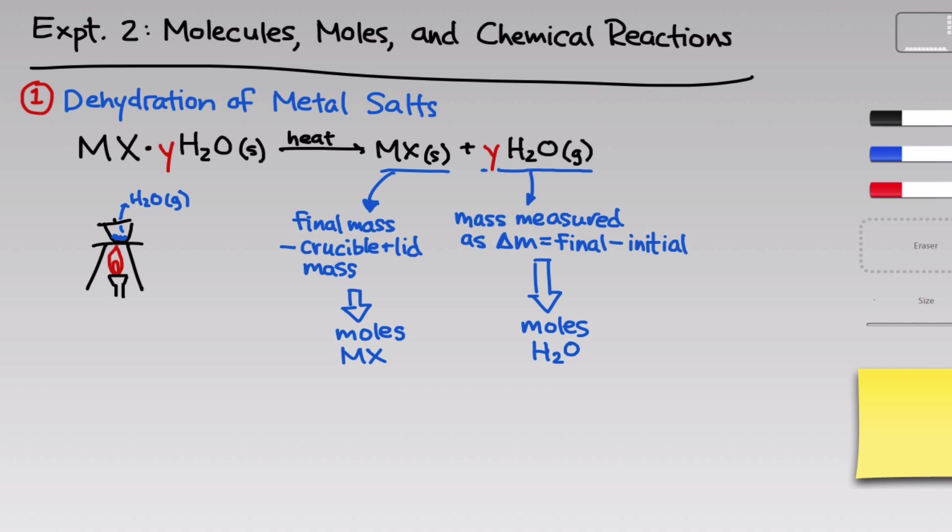The general idea behind this part of the experiment, using a chemical reaction to characterize an unknown compound, is a very common practice. Here, the idea is quantitative. We want to come up with a value Y. But we can also use chemical reactions to characterize unknown samples in a qualitative way, for example, to identify the presence of certain structures or functional groups through reactions that are known to occur on those functional groups.